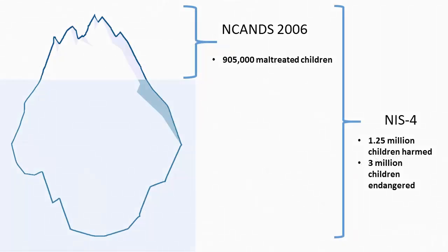The congressionally mandated NIS serve as the nation's needs assessment on child abuse and neglect. NIS collect data from community professionals to estimate the incidence of child maltreatment. NIS provide information on the nature and severity of the maltreatment, characteristics of children, perpetrators, and families, and changes in the distribution of maltreatment over time.